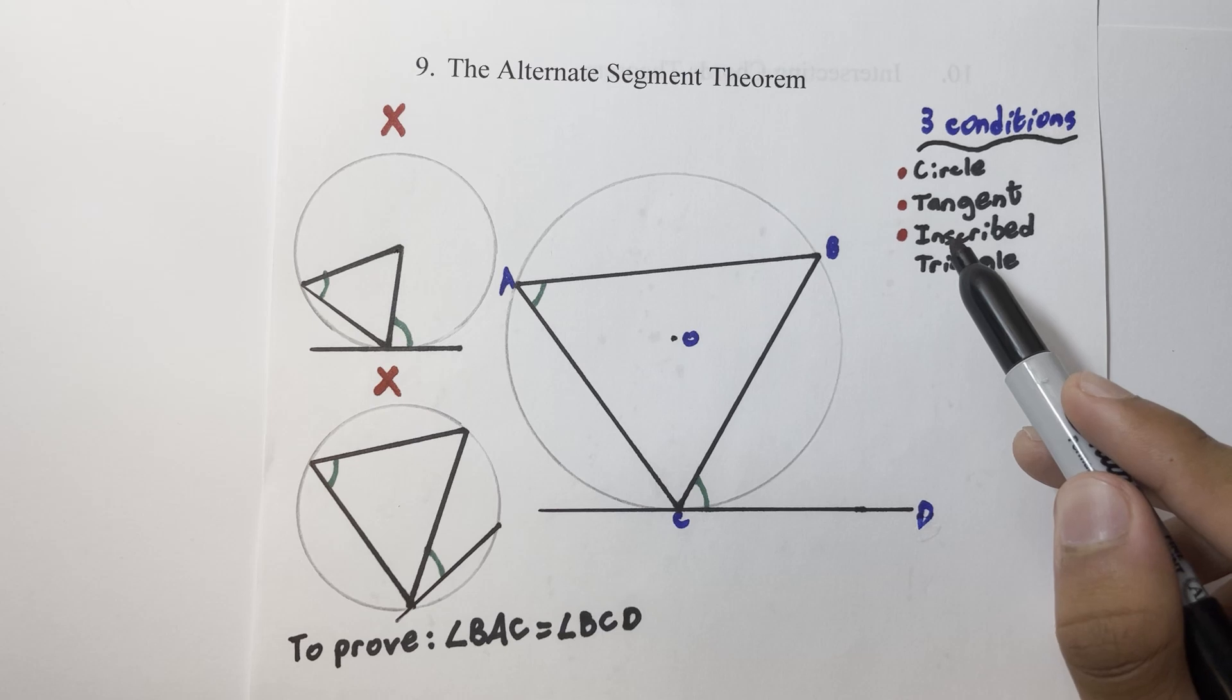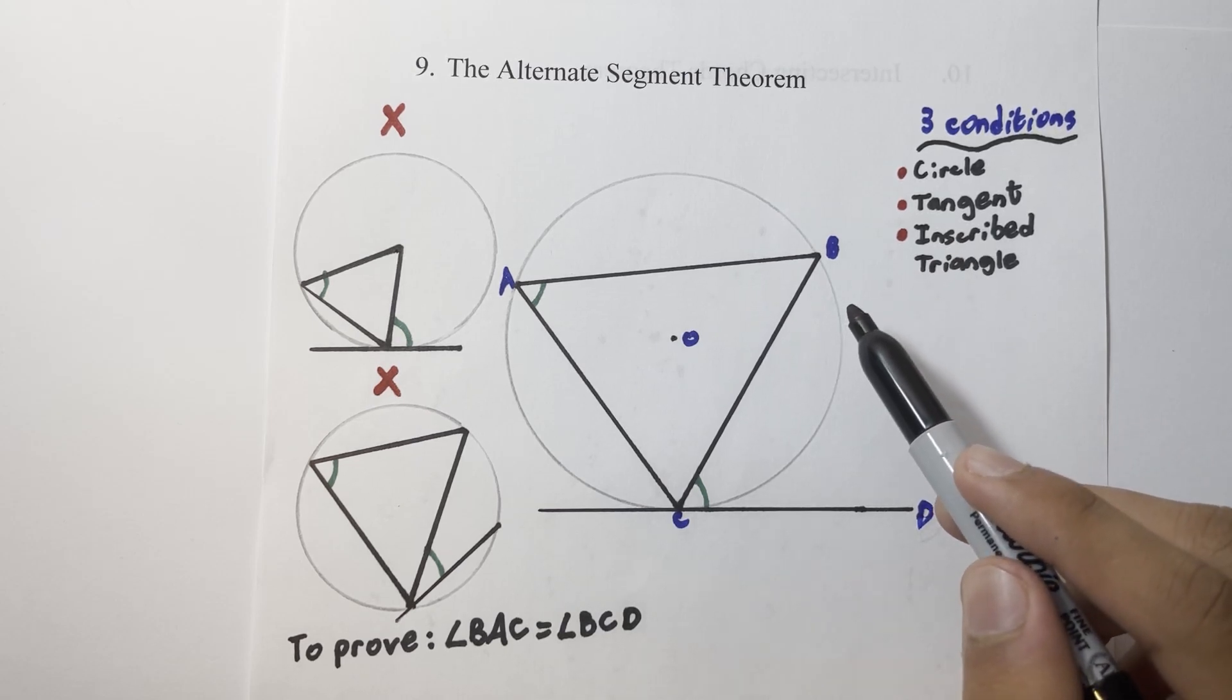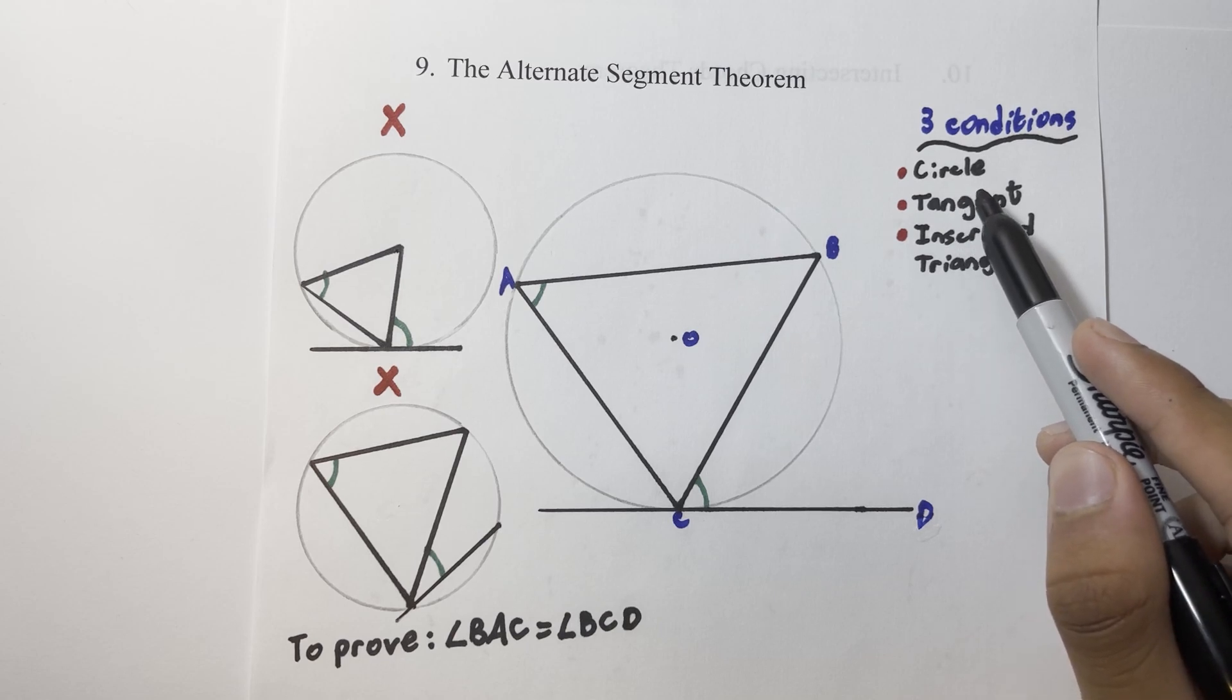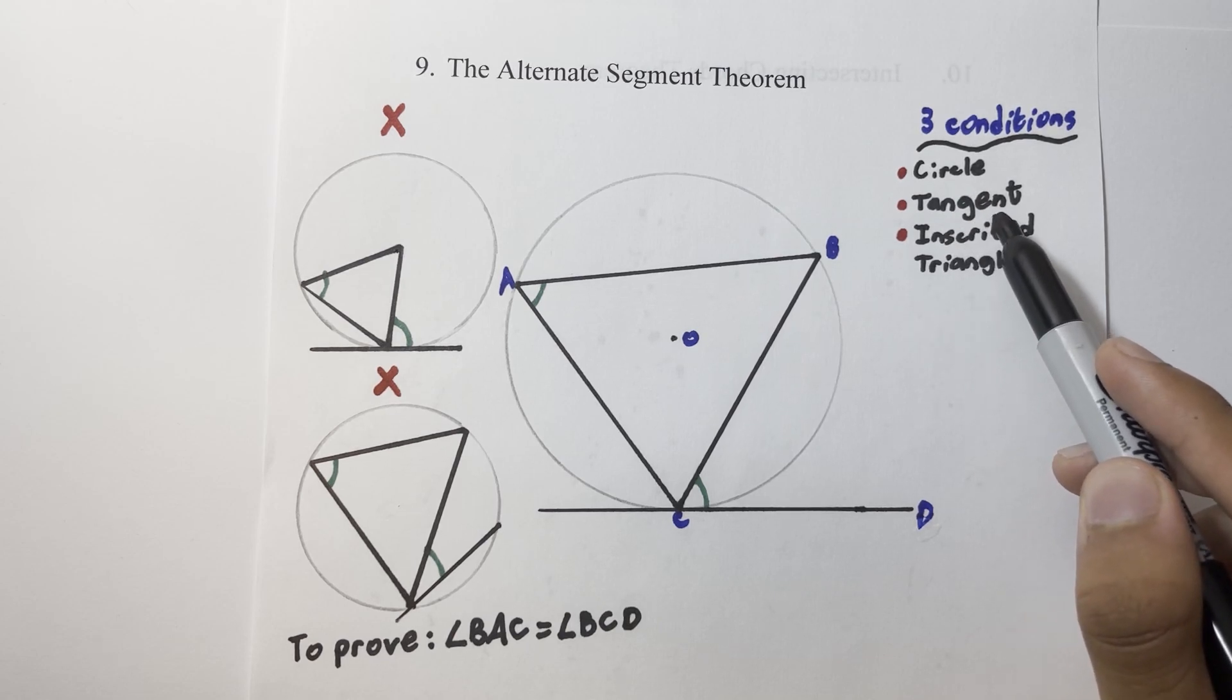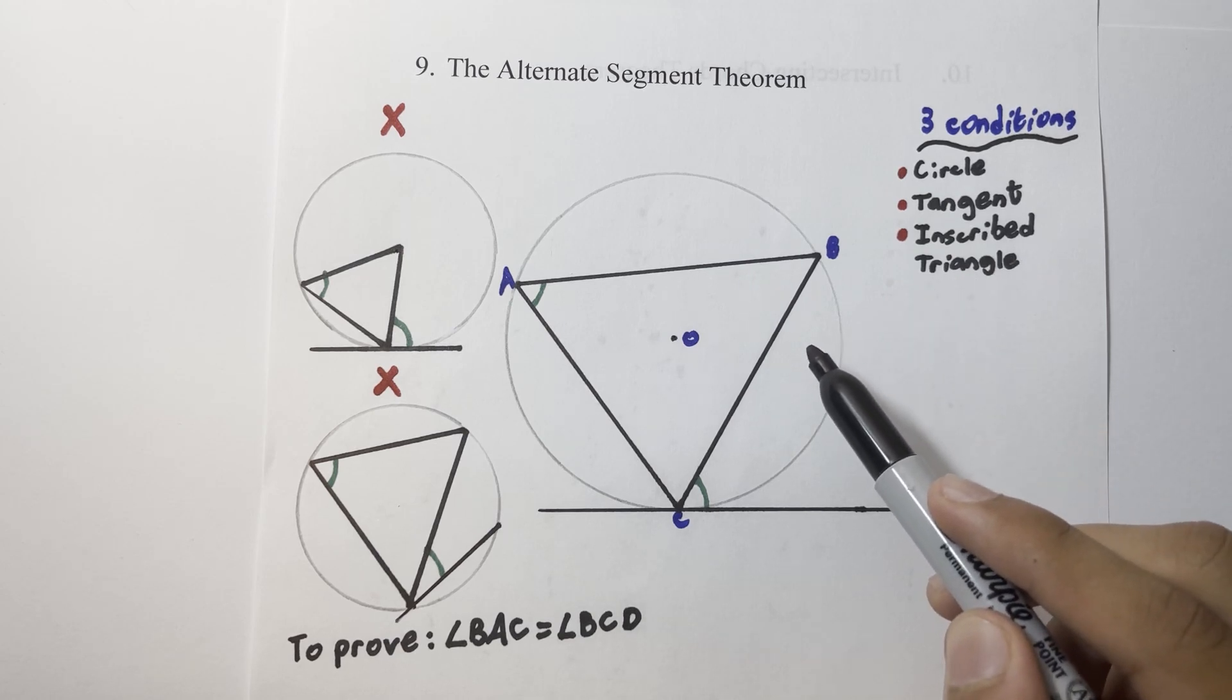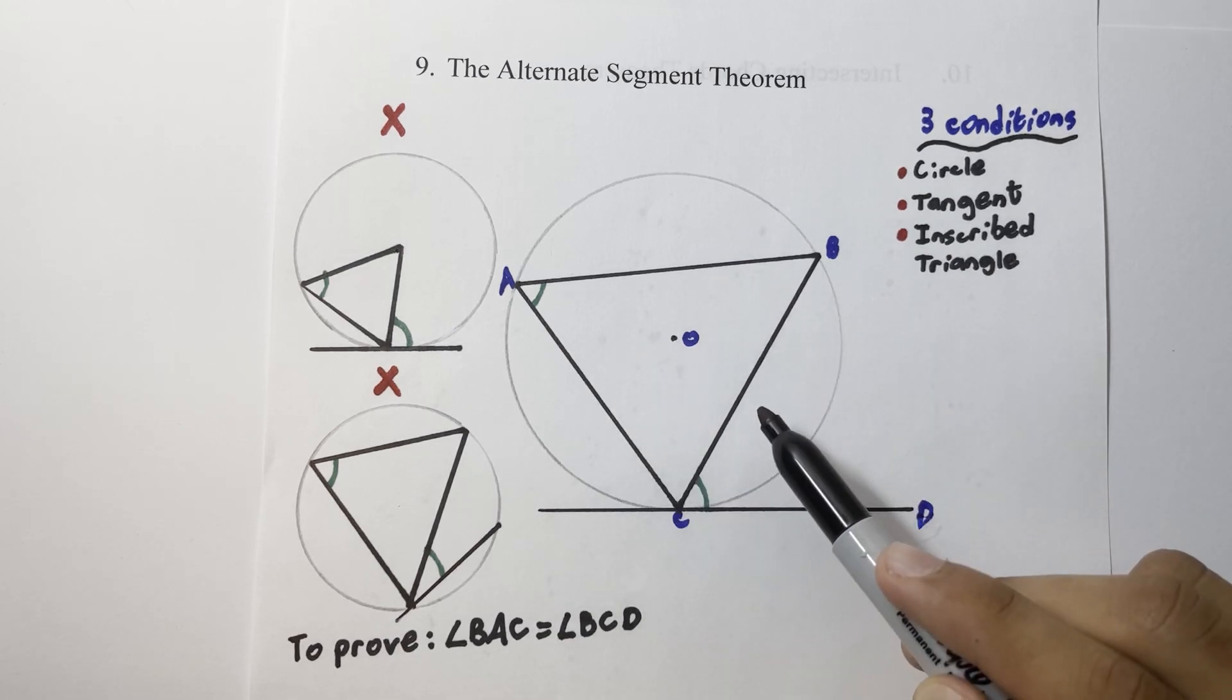There's three conditions that need to be followed to prove that the Alternate Segment Theorem is present within a problem. Firstly, and unsurprisingly, you need a circle, then you need a tangent to that circle, and finally you need an inscribed triangle.